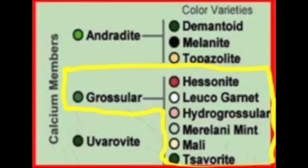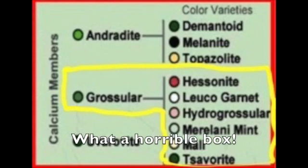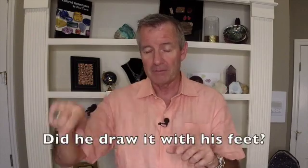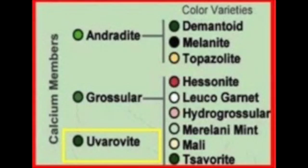This yellow box indicates the six different color varieties of grossular garnet, which was covered in last week's lesson. I'll admit the box looks horrible — I had to draw it freehand on my computer. Anyway, this third chart shows that there is only one variety of uvarovite garnet, and it only comes in one color: green. Uvarovite is truly one of a kind and is in a class all by itself.